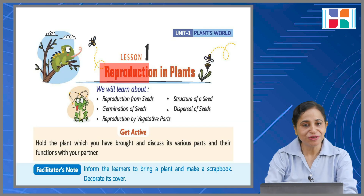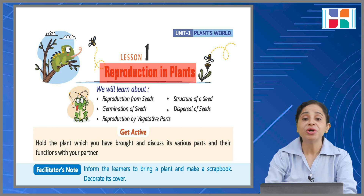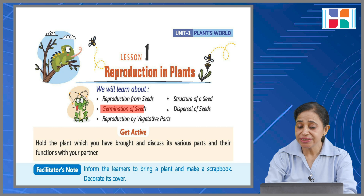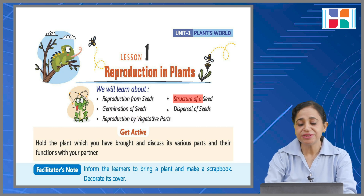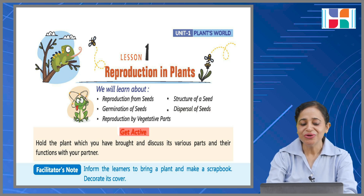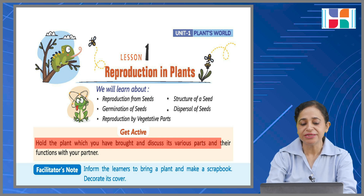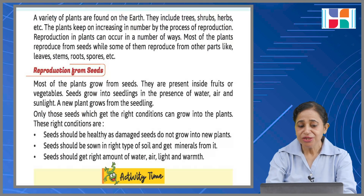I hope you all are doing fine. Let's start the new chapter: Reproduction in Plants. Are you people ready to start the chapter? In this chapter you are going to learn about reproduction from seeds, germination of seeds, reproduction by vegetative parts, structure of a seed, and dispersal of seeds. Get active — hold the plant you have brought and discuss its various parts and their functions with your partner.